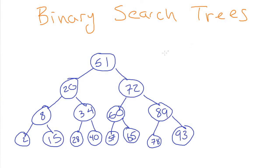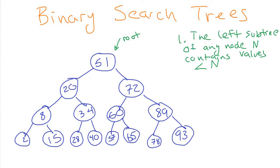Here is a picture of a binary search tree. As you can see, it's a tree with a root drawn at the top. It is a binary tree because none of the nodes have more than two children. It is also a binary search tree, which means it follows a few other rules. The first rule is that for every node in the tree, all of the nodes in the left subtree contain values only less than the node we're looking at.